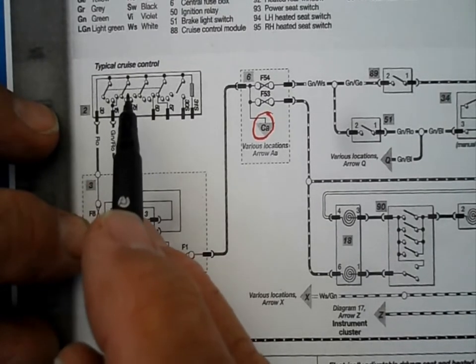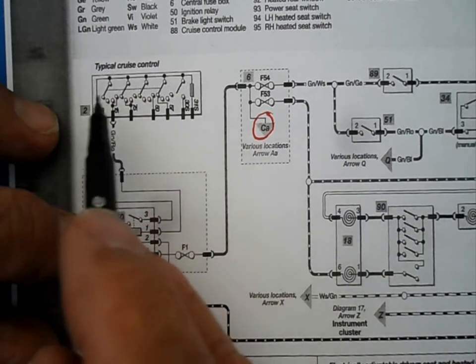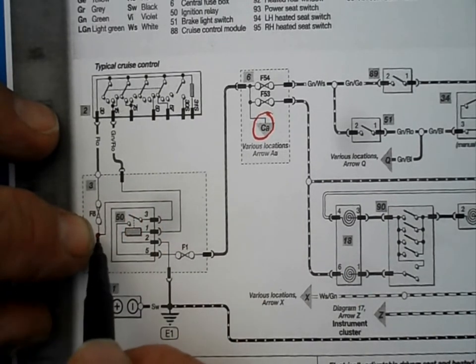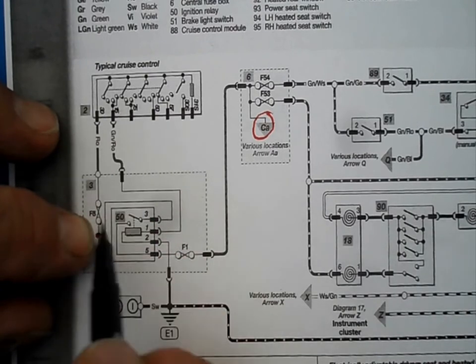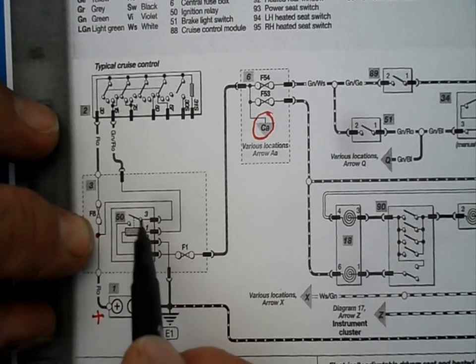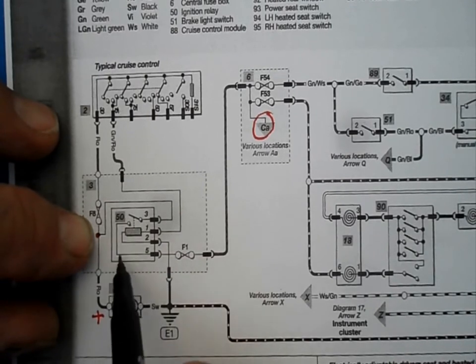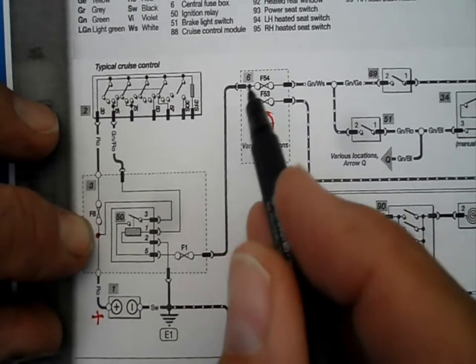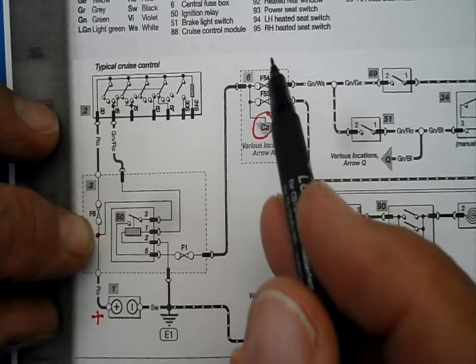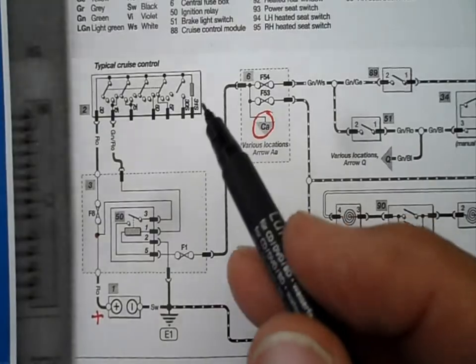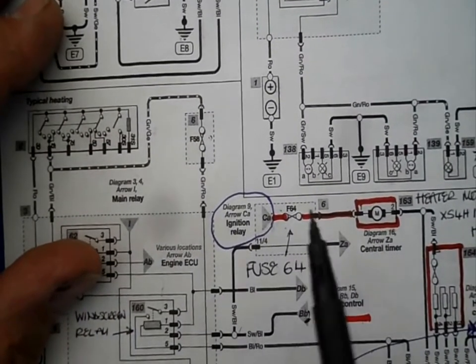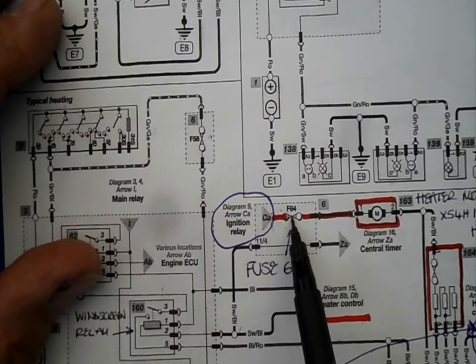It feeds fuse 8, which feeds the ignition switch. And all the ancillaries come from the ignition switch, are switched on by the ignition switch. But there's another tap off of here, which doesn't go through the ignition switch. It goes through this relay. And once that relay is closed, then the power comes through to fuse 1. And then through to CA connection, which then goes to here and feeds fuse 64.